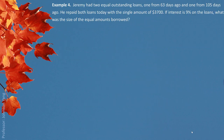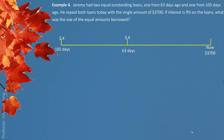Example 4. Jeremy had two equal outstanding loans — one from 63 days ago and one from 105 days ago. He repaid both loans today with a single amount of $3,700. If the interest rate is 9% on the loans, what was the size of the equal amounts borrowed? Both loans are the same size, so we label them X. The $3,700 paid today covers these two loans together, so 2X together should be equivalent to $3,700.